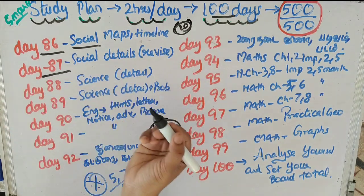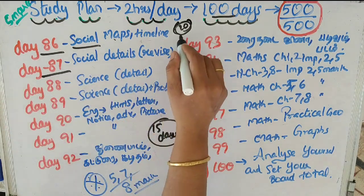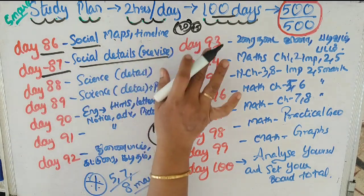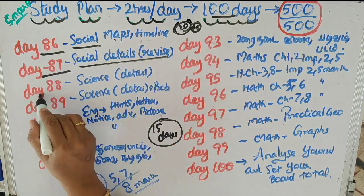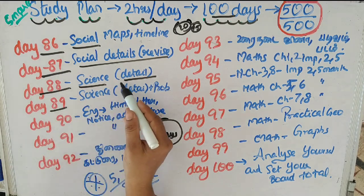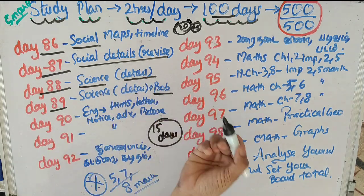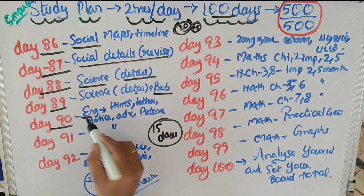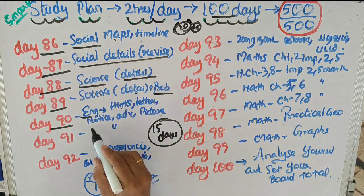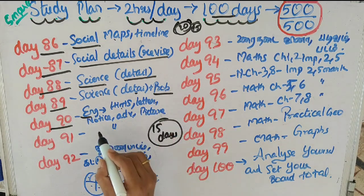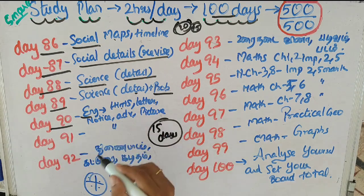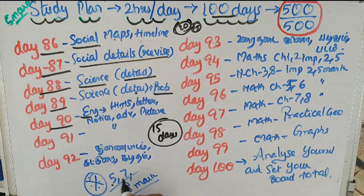Day 87: We will cover all the details and revision. Day 88: We will revise all the details in Science. Day 89: All the Science details and all the problems. Day 90: 5-mark questions and 8-mark questions - that is hints, letter, notes, advertisement, and picture description. We will review all of these.